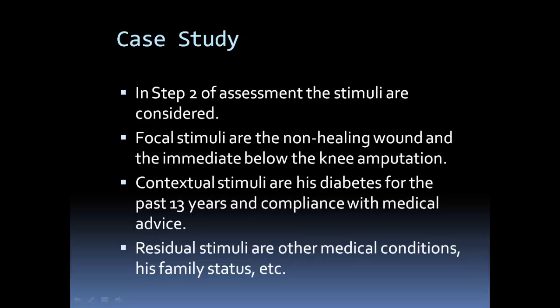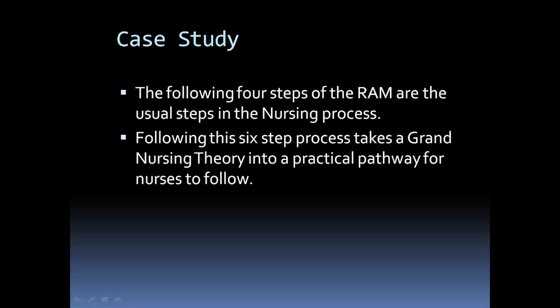In step two, the assessment of the stimuli is considered. The focal stimuli are the non-healing wound and the immediate below-the-knee amputation. Contextual stimuli could be his diabetes for the past 13 years, whether he was compliant with medical advice, and how he's treated himself over those years. Residual stimuli could include other medical conditions such as heart disease, or his family status — is he married, does he have children, are they supportive or estranged from him?